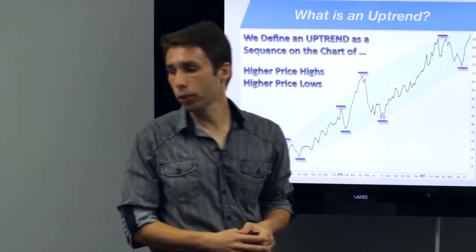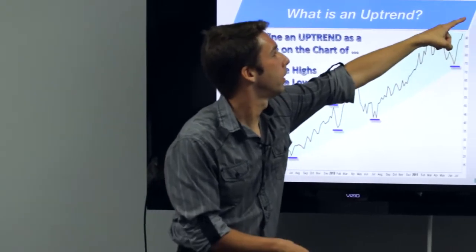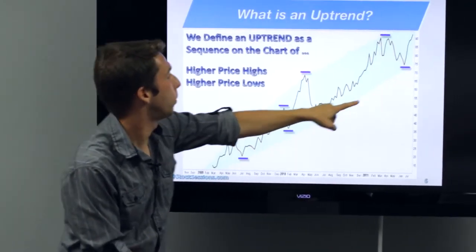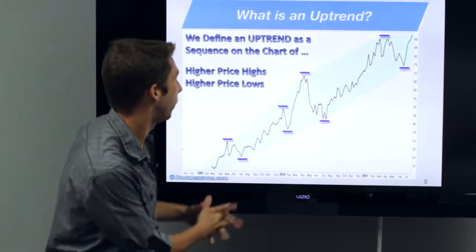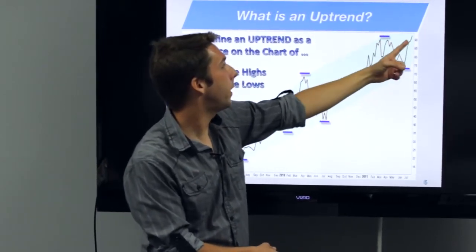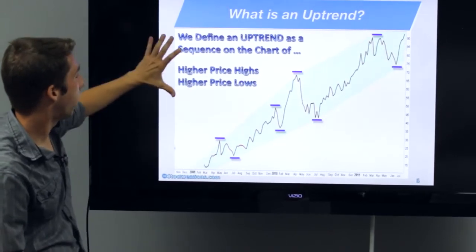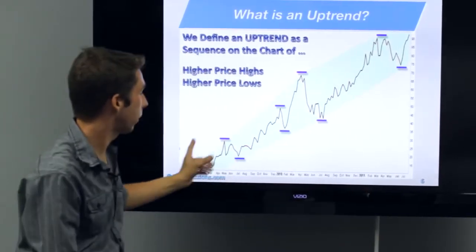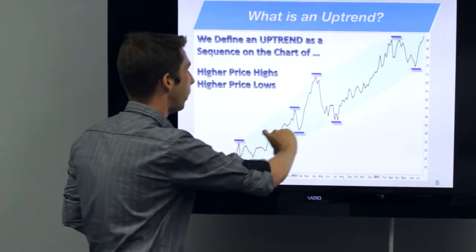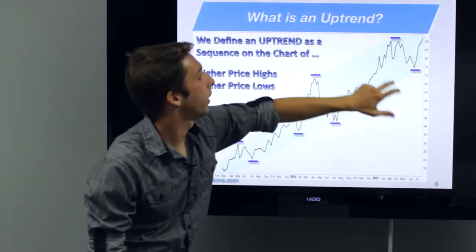Let's go ahead and define an uptrend. It's a sequence over time — here are weekly charts in all the examples. Higher highs over time, and higher lows. Apple actually — moving higher into the $90 per share range. This is July, and Apple, AAPL, just broke out. An uptrend moves left to right on the chart, from here to there, moving from the bottom toward the top of the chart. We define that as a series of higher highs and higher lows.